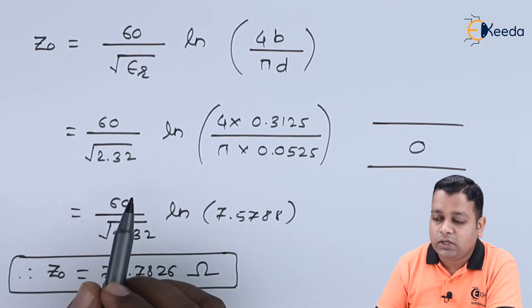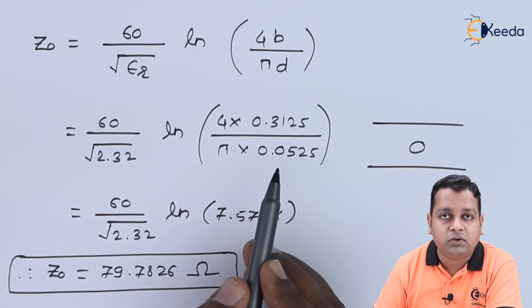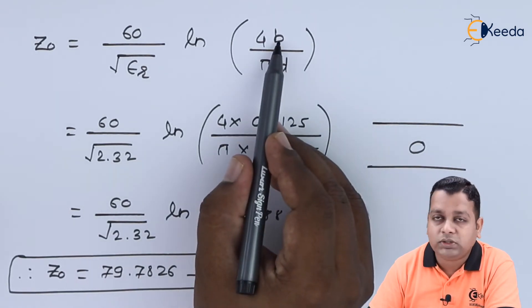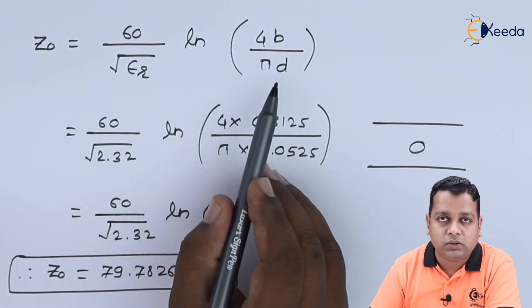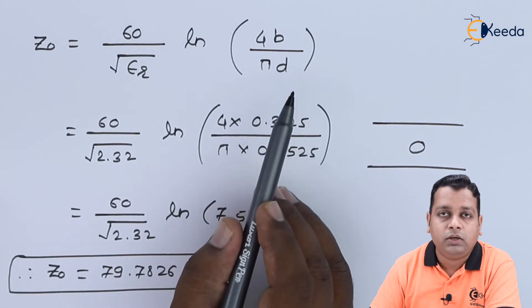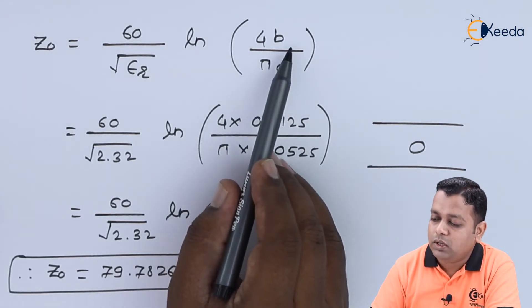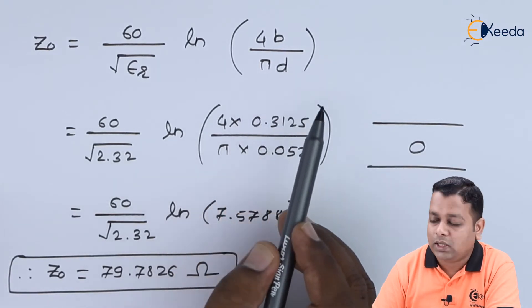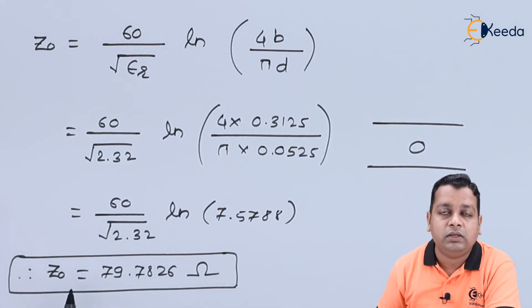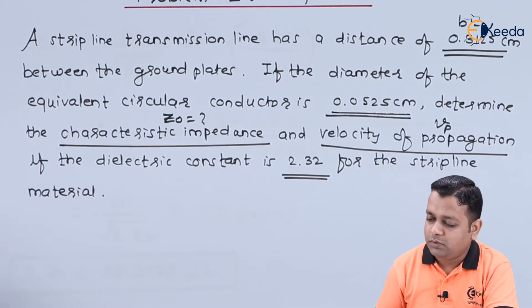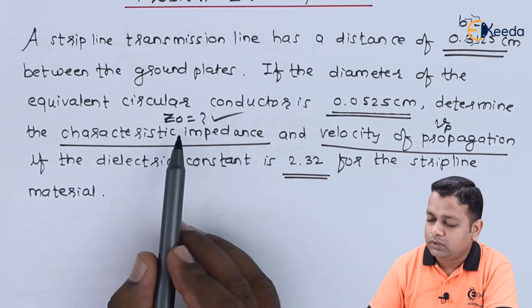When substituting B and D, the values were used in centimeters because B appears in the numerator and D in the denominator. Since both carried the factor 10⁻², these cancel out, so it was not necessary to convert them to meters explicitly. This calculation gives us the first required value — Z0 is now determined.